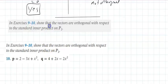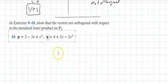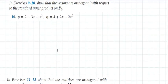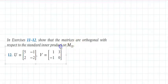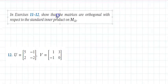Showing that vectors are orthogonal with respect to the standard inner product on P2: take the inner product p dot q. Computing: 8 minus 6 minus 2 equals 0. That is sufficient — you just need to show the inner product is zero.